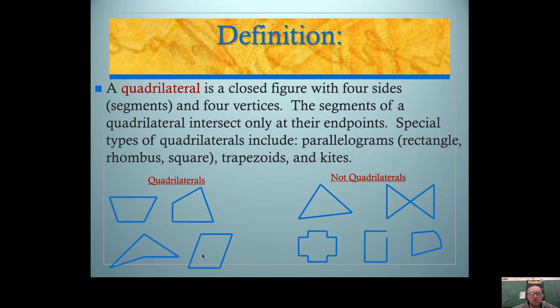So here's some examples of what quadrilaterals look like. Four sides. They're closed. You've got four segments and four vertices.